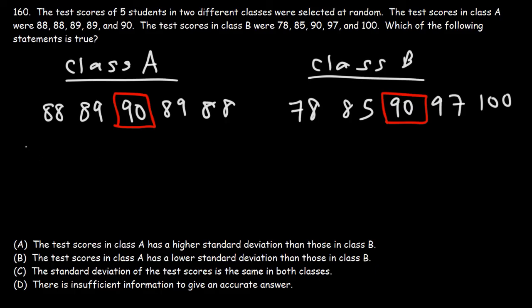That's Class A. All the test scores are very close to 90, which is the mean. So therefore, Class A is going to have the lower standard deviation.